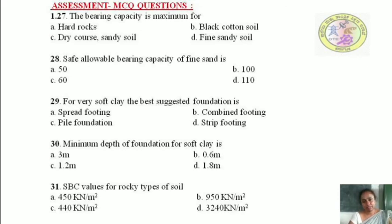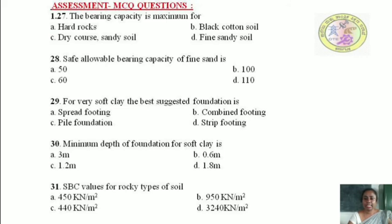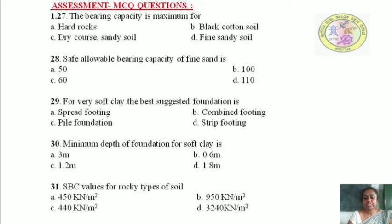Question 4: Minimum depth of foundation for soft clay is — 3 m, 0.6 m, 1.2 m, or 1.8 m? The answer is 3 meters. Question 5: SBC value for rocky type of soil — 450, 950, 440, or 3240 kN/m²? Since rocky soil has the highest SBC, the answer is 3,240 kN/m². The answers to these MCQ questions are provided in the next slide.